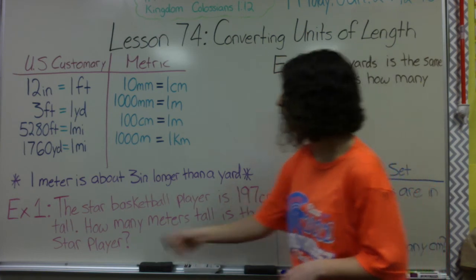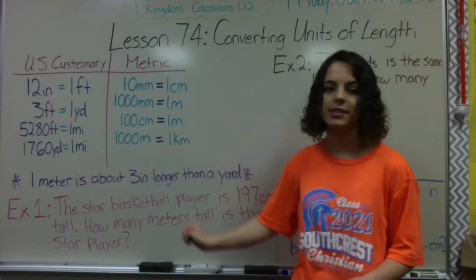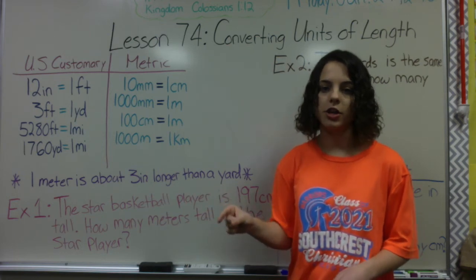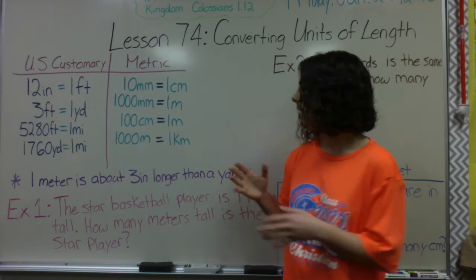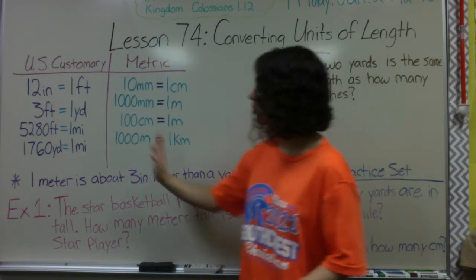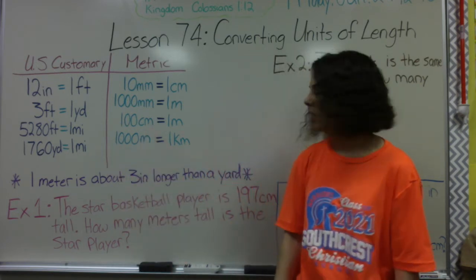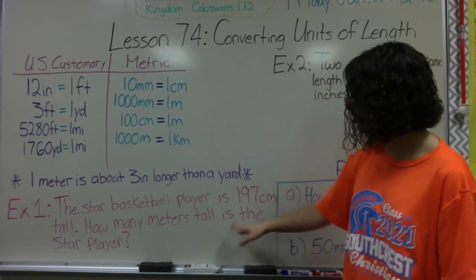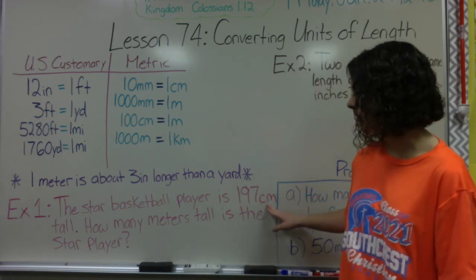One important note: 1 meter is about 3 inches longer than a yard. We don't have exact conversions between the US customary system and the metric system, but that's the best comparison between the two. For example 1: a star basketball player is 197 centimeters tall — how many meters tall is the star player?